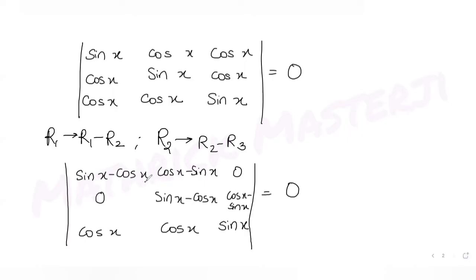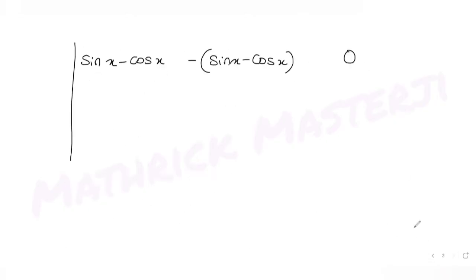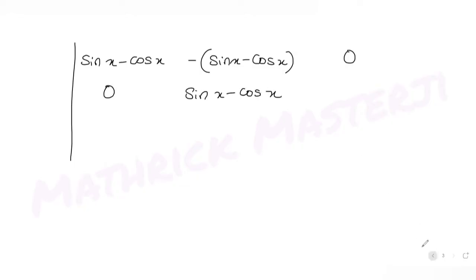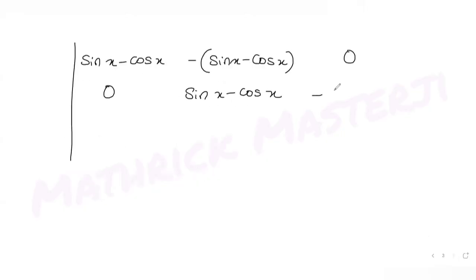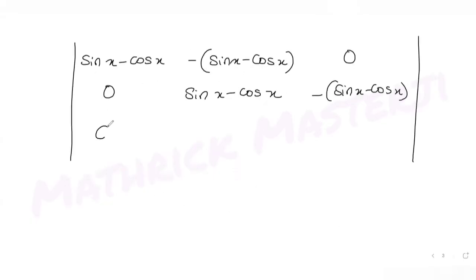Looking at the second row more carefully: the first element is zero, the second is sin x minus cos x, and taking minus sign common from the third element also gives sin x minus cos x. The third row remains cos x, cos x, sin x, and the entire determinant equals zero.